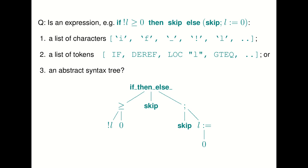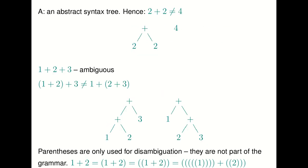If you see an expression like 'if !l > 0 then skip else l := 0', you might think of it in your text buffer as a list of characters. When fed to a compiler, it first gets tokenized into a sequence of tokens rather than characters. Then the parser turns this into an abstract syntax tree: a root node which is a conditional with three subterms — the greater-than-or-equal comparison, skip-semicolon, and a sequence of smaller expressions. The ML code represents your program as this tree, which is exactly what the parser produces.